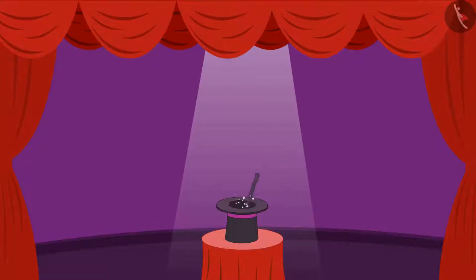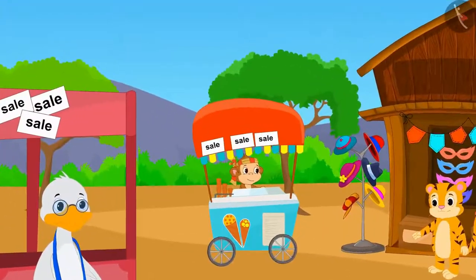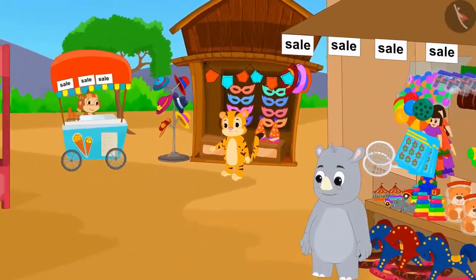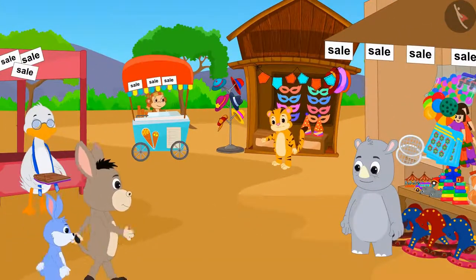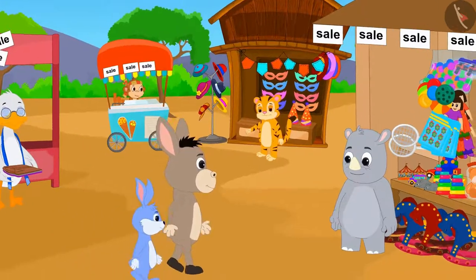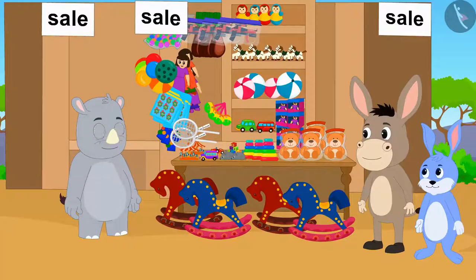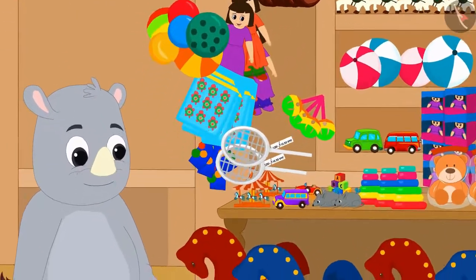Hello children, in this video we will learn about what is hundredth. There is a sale going on in several places in the Champapur market. Bunny and Bhoala have come to the market to shop. First, they have come to Gaggoo's shop to buy toys.